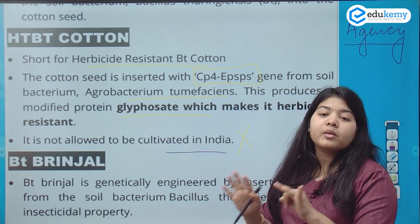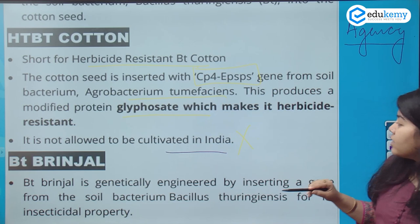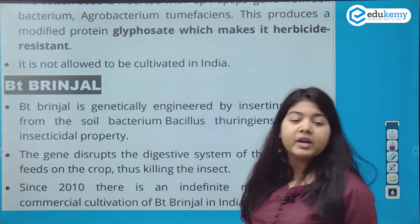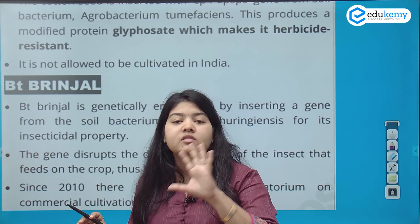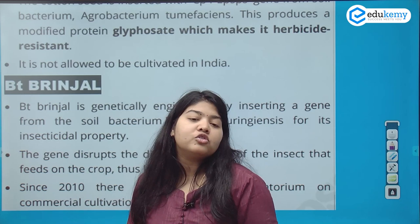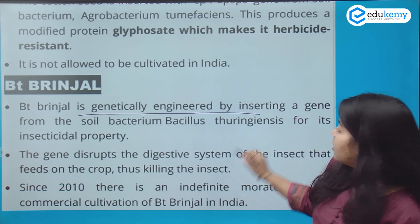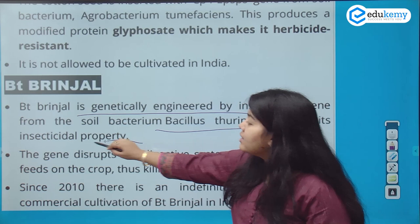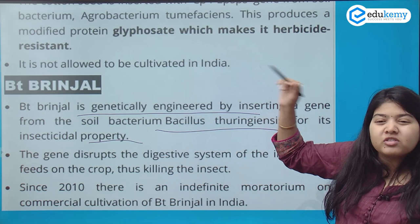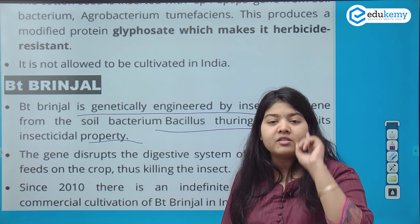BT brinjal was also in the news. BT crops use Bacillus thuringiensis for insecticidal properties. The gene cry1Ac has been asked about in exams. Regulation of GMOs is done by the Genetic Engineering Appraisal Committee. BT brinjal is genetically engineered and is being cultivated illegally in India.